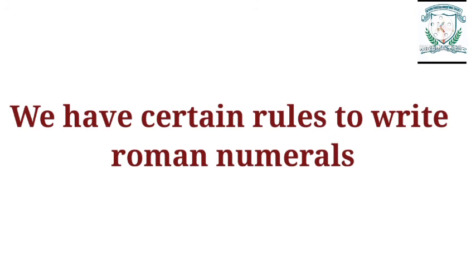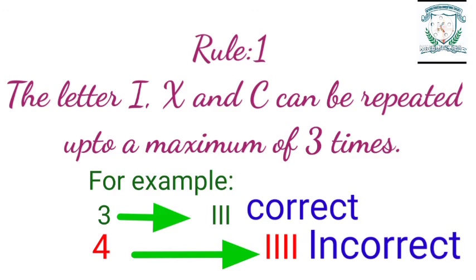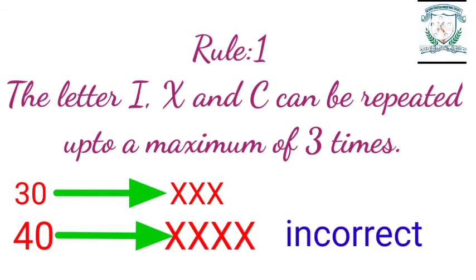We have certain rules to write Roman numerals. Rule 1: The letters I, X and C can be repeated up to a maximum of 3 times. For example, 3 can be written as III. We don't represent 4 as IIII — that is incorrect. 30 can be represented as XXX. We don't represent 40 as XXXX — that is incorrect.